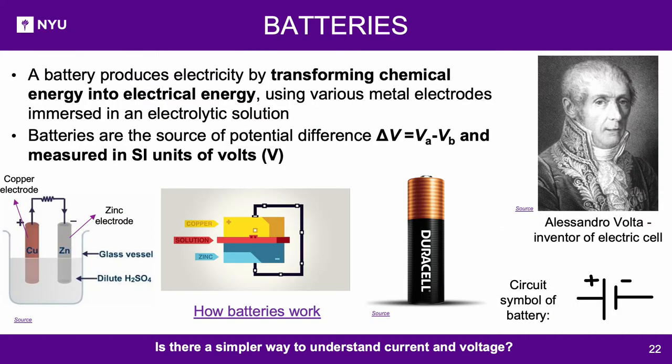Batteries: The source of voltage required for flow of electrons can be produced by various means — chemical reaction being one of them. A battery stores chemical energy and converts it to electrical energy. The chemical reactions inside a battery involve the flow of electrons from one electrode to another through an external circuit, which is electric current. Batteries are the source of potential difference and measured in SI units of volts.